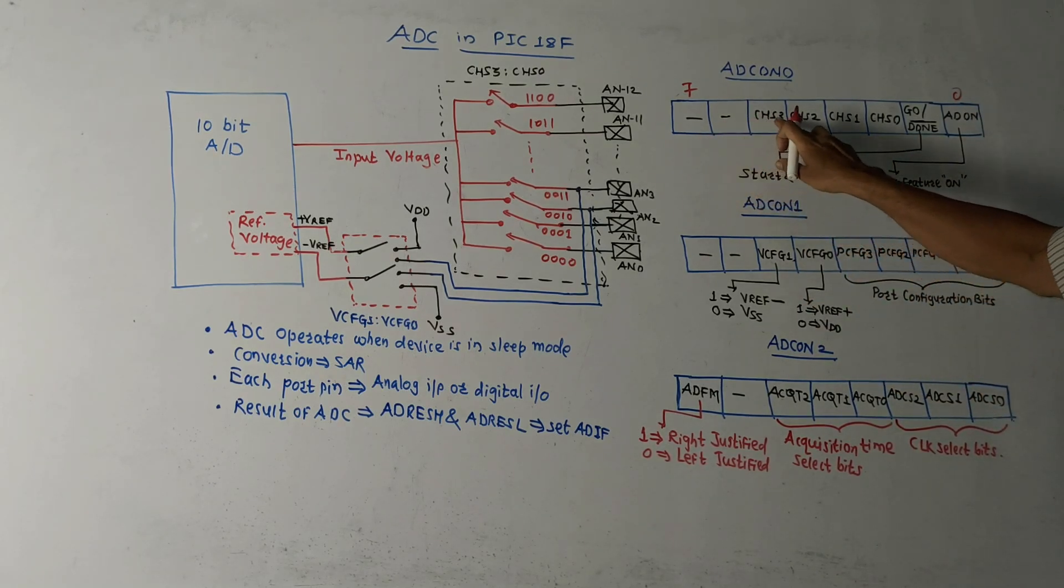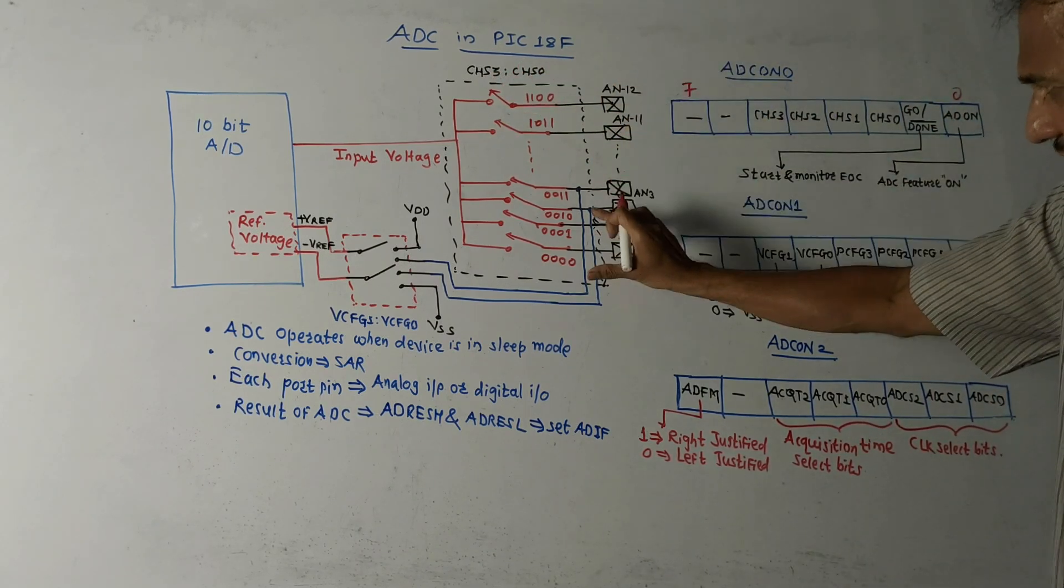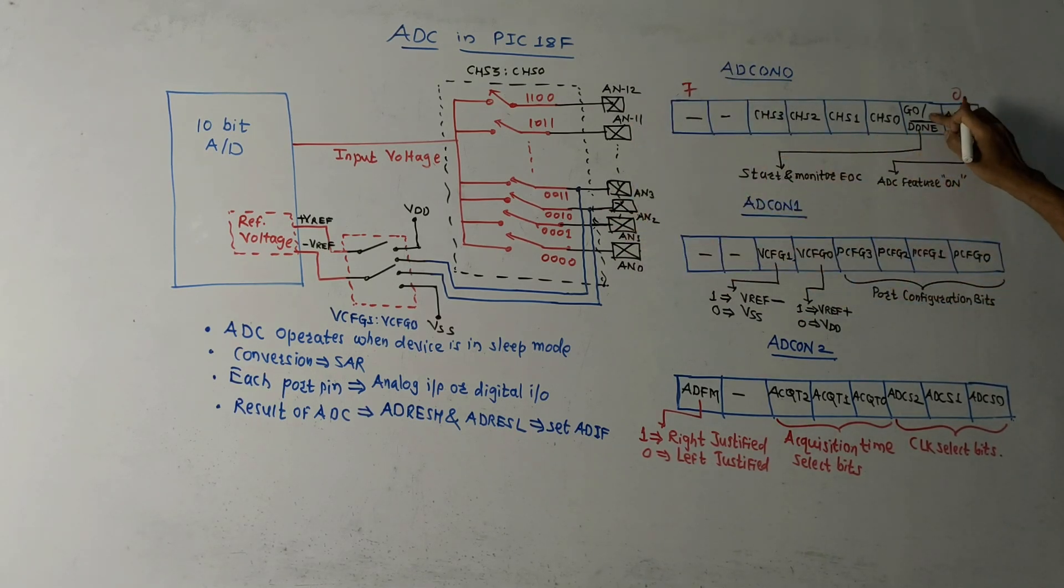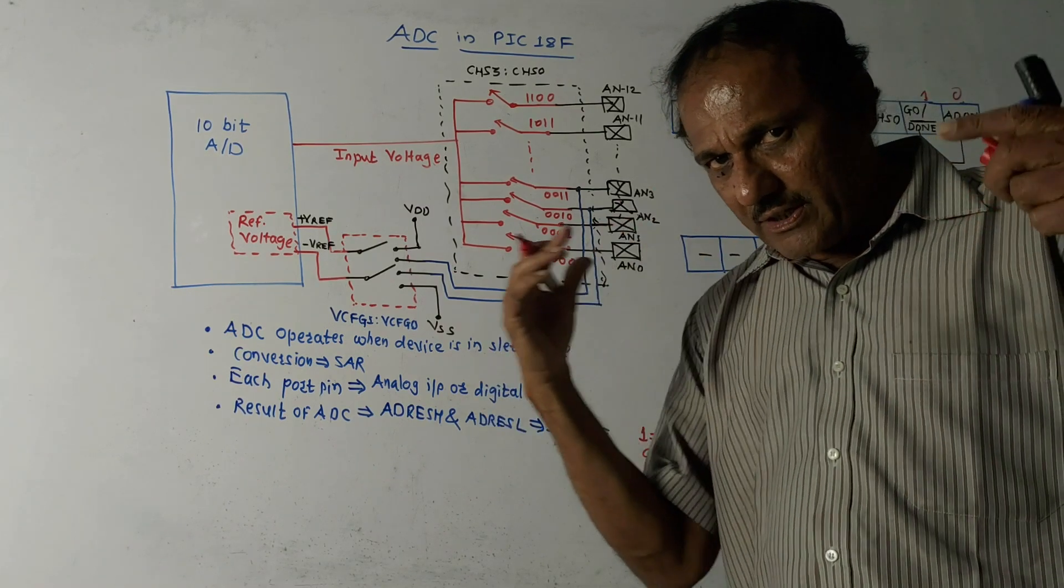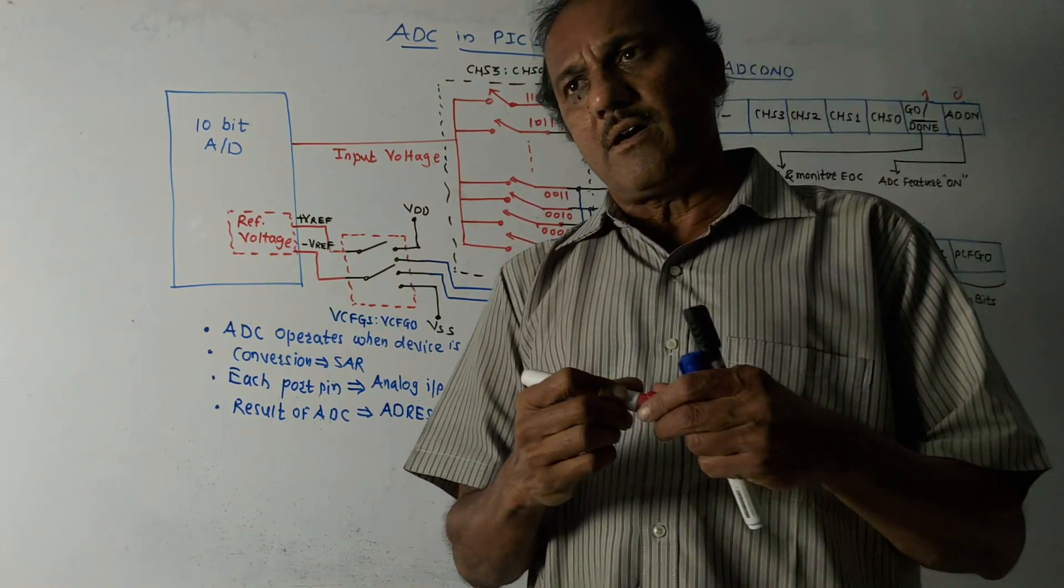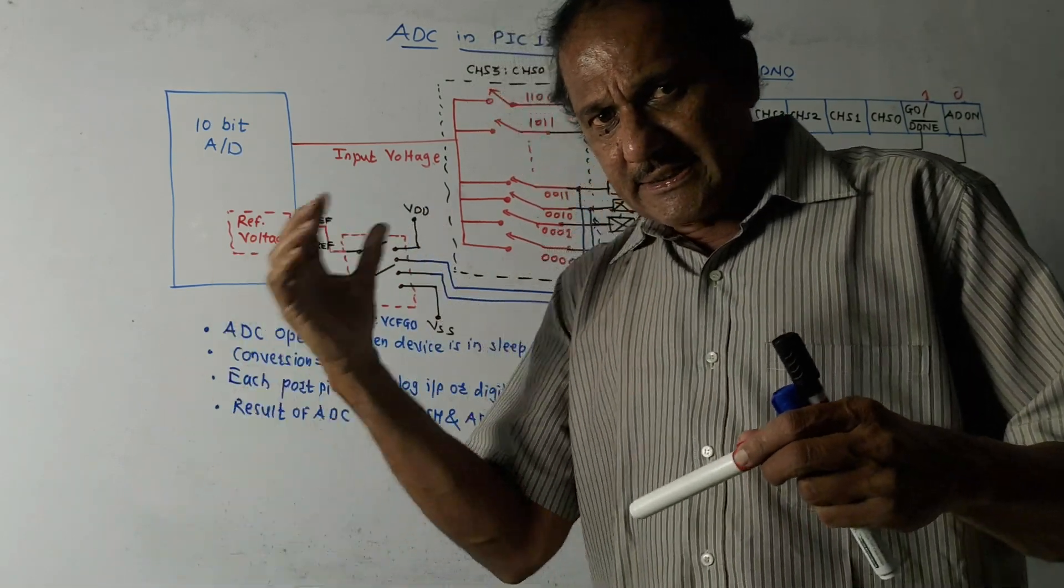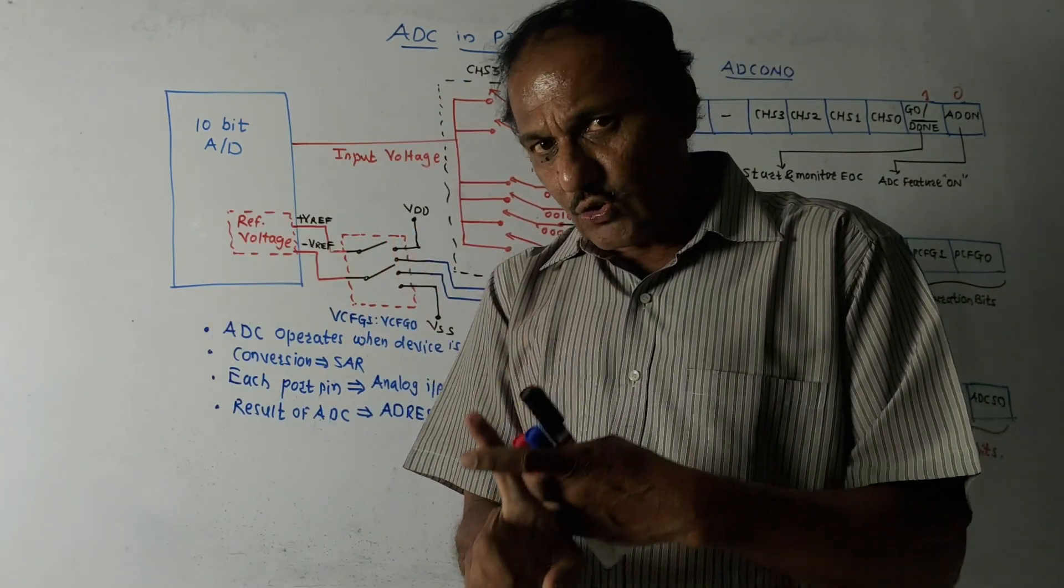Next is ADON, that is ADC feature is on. What happens? Whenever the microcontroller is powered on, ADC is not switched on just to save the power. So you will have to switch on the ADC, analog to digital conversion, whenever required.